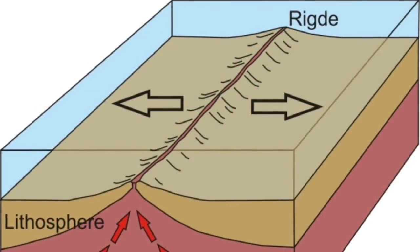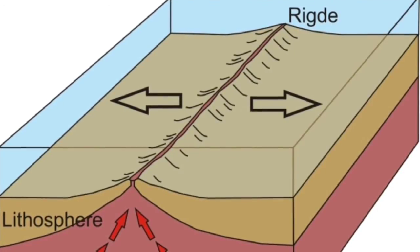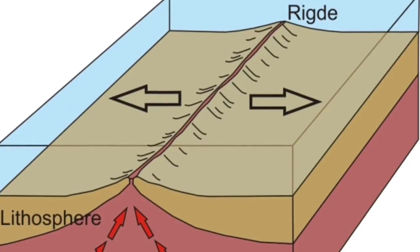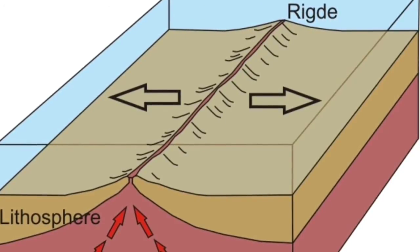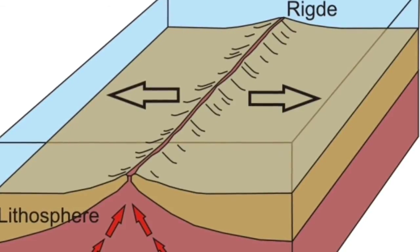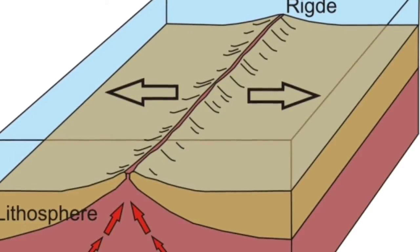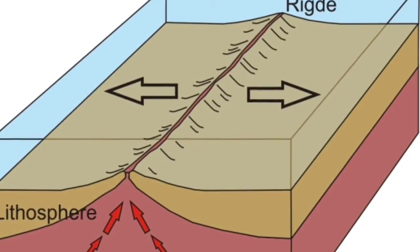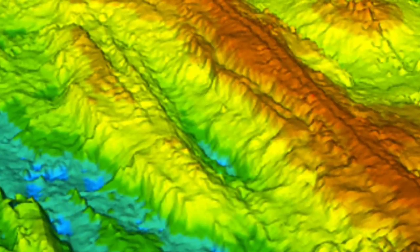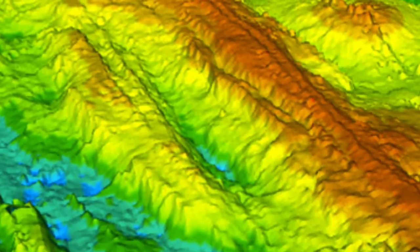Switching from these convergent collisions, we also have divergent reactions, which are when basically two parts of the Earth's crust separate. An example would be mid-ocean ridges, which are a great example of how this happens. These convection currents from the mantle basically rip apart the ocean floor.